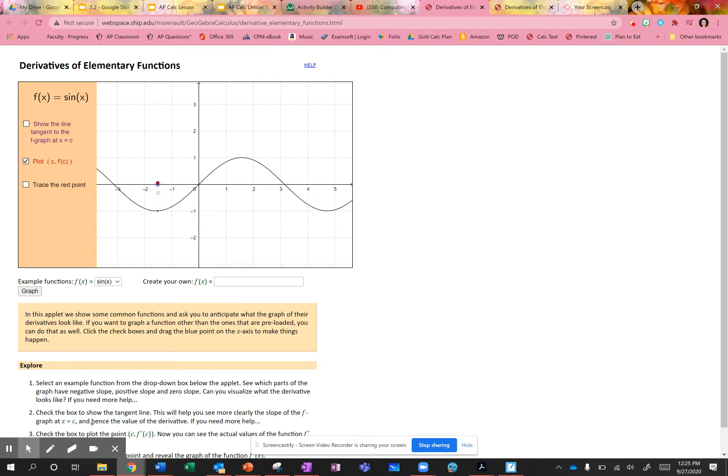Let's draw that slope in. So the slope is positive, positive. It's still positive but decreasing. Now the slope is 0. Now the slope is negative, negative, negative, and now it's 0.